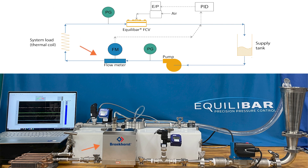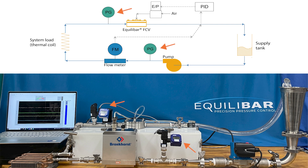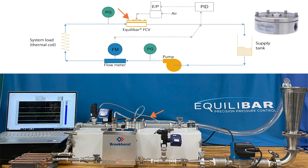We have installed a Bronkhorst Coriolis mass flow meter to provide precise documentation of our valve authority. We have a heat exchanger coil as our resistive load; DP increases exponentially with flow across the coil. The coil is an analog for any fluid resistance such as a filter membrane, an orifice, or a long run of pipe. We have pressure sensors after the pump and before the control valve so that we can calculate the valve authority accurately using delta P. We are using an Equilibar half-inch GSD4 control valve to control the flow. Our ability to control at low valve authority allows us to install a larger valve here to get more thermal capacity out of the pump while also not losing control. We circulate the water back to the supply tank.